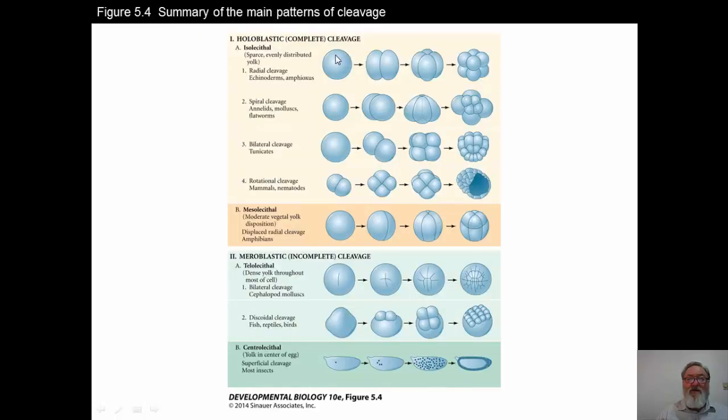So just to kind of quickly summarize then, we have the isolecithal, where the yolk is fairly sparse. You can get radial cleavage, where all of the blastomeres are the same, they're of the same size. Echinoderms, amphioxus.